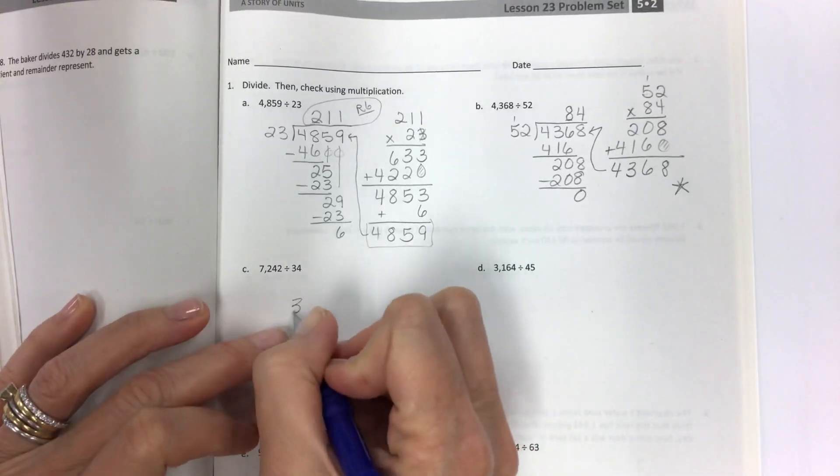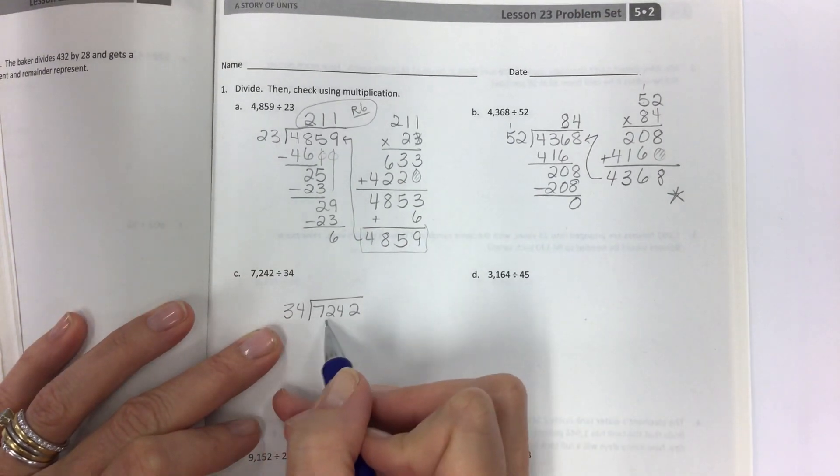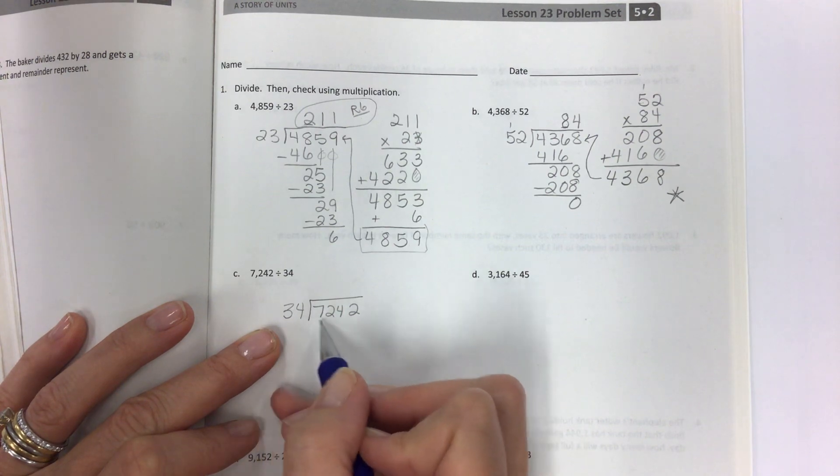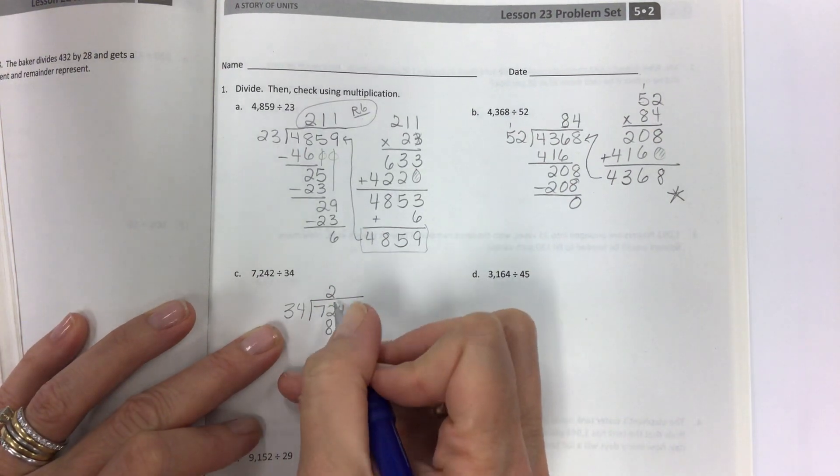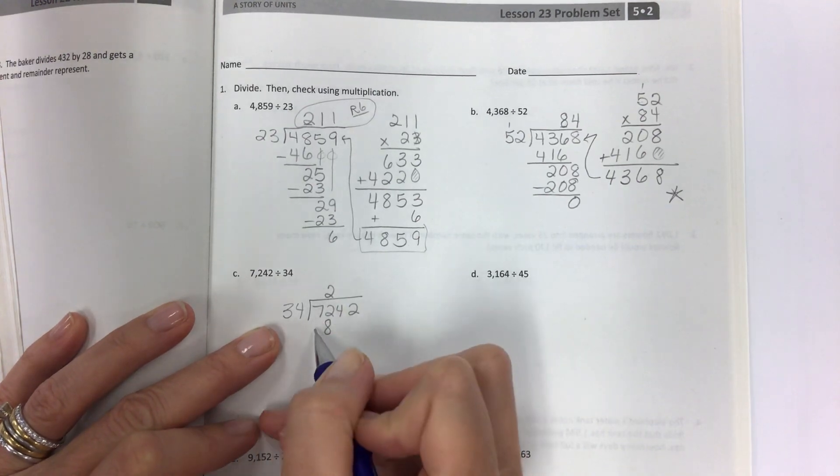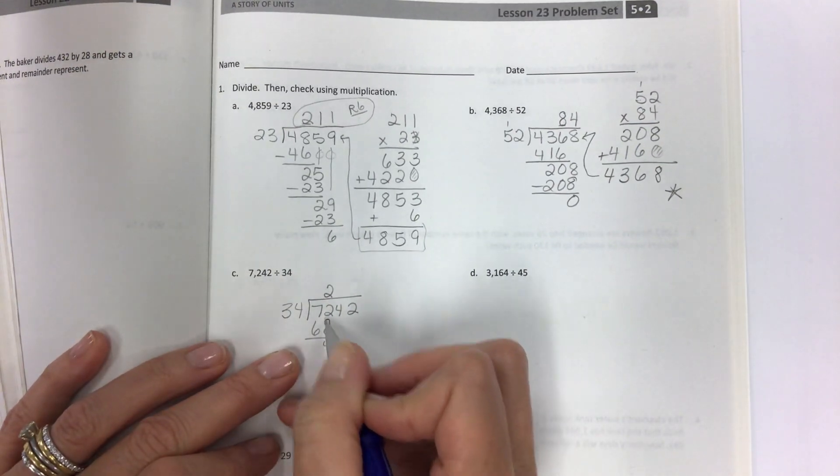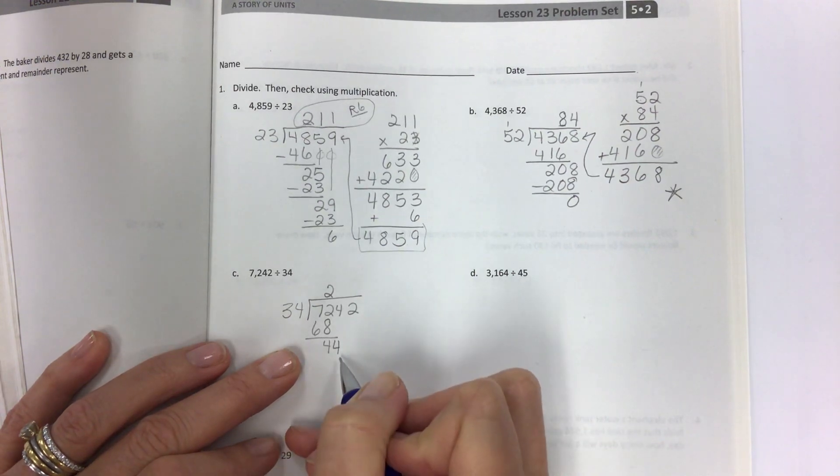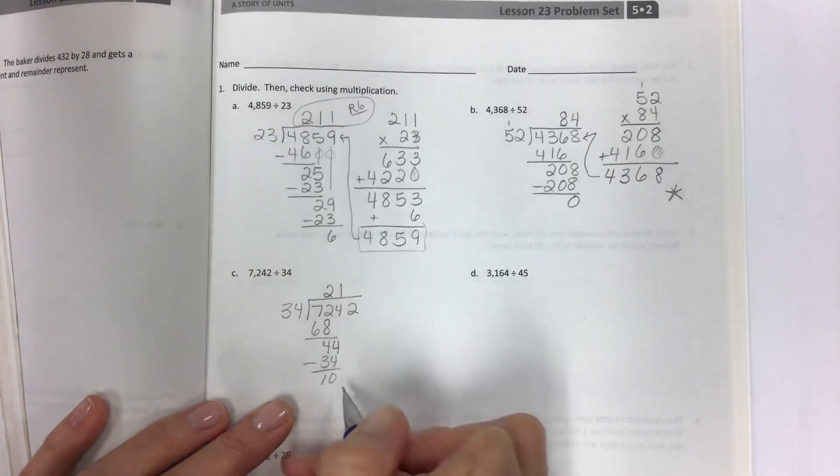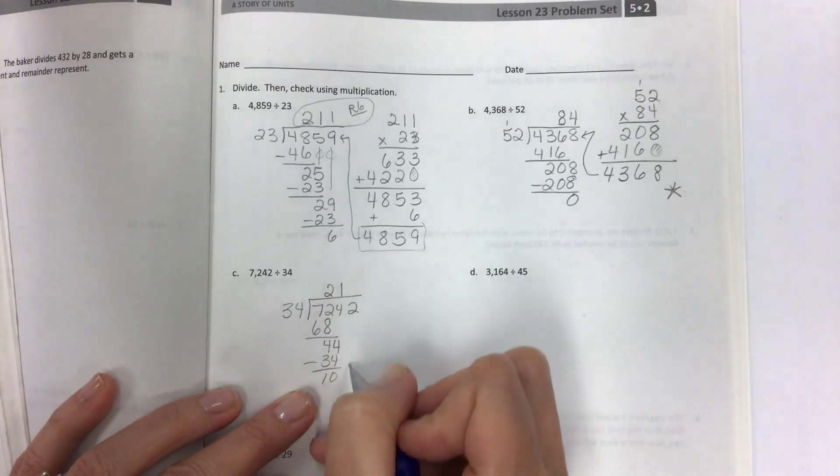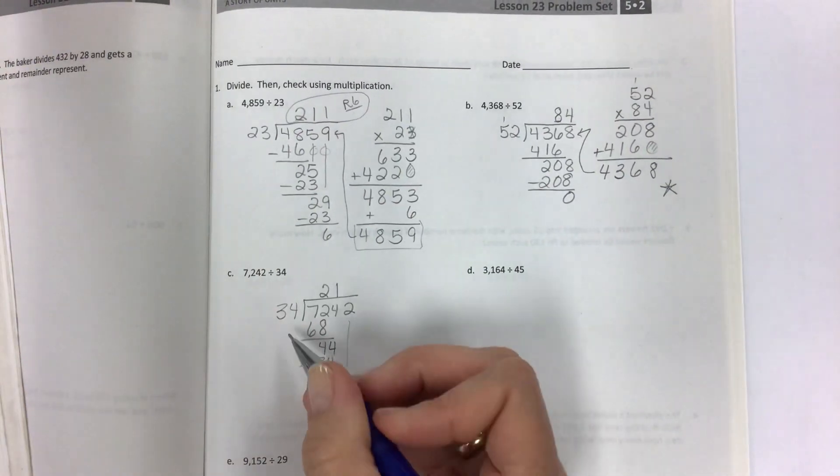Let's do another one. 34 into 7,242. If I have two 30s, it would be 60, but I also have 8. I'm still safe with 2. 2 times 4 is 8. Lining up the digits very carefully in the hundreds place here. 2 times 3 is 6. The difference between 68 and 72 is 4. Bring down the 4, divide 44 by 34, one time, multiply, subtract. The difference is 10. Bring down the 2. 102 divided by 34.